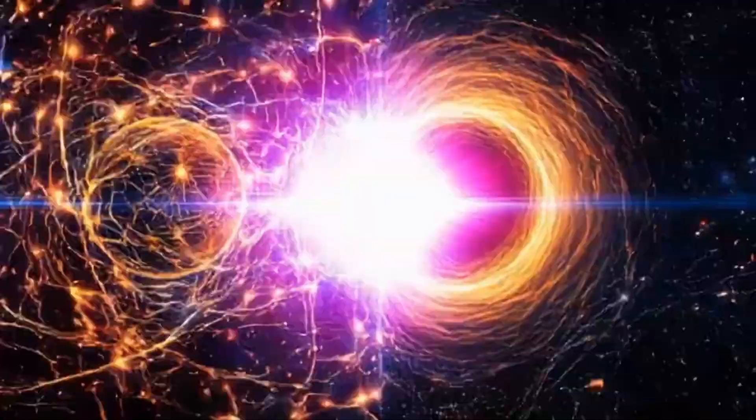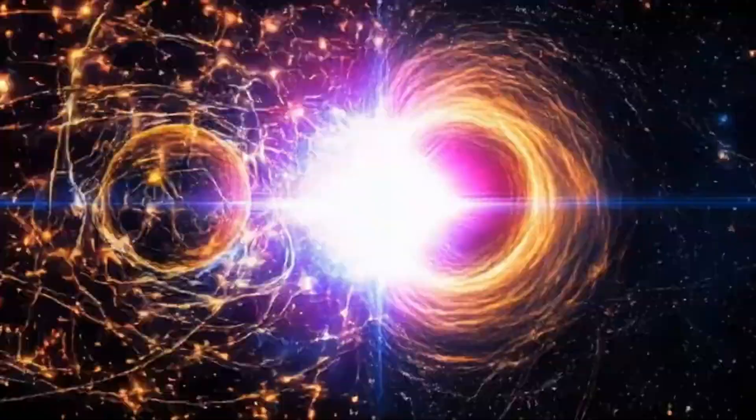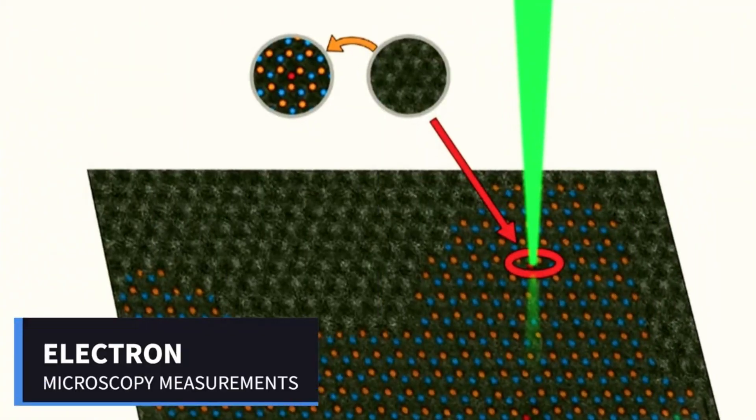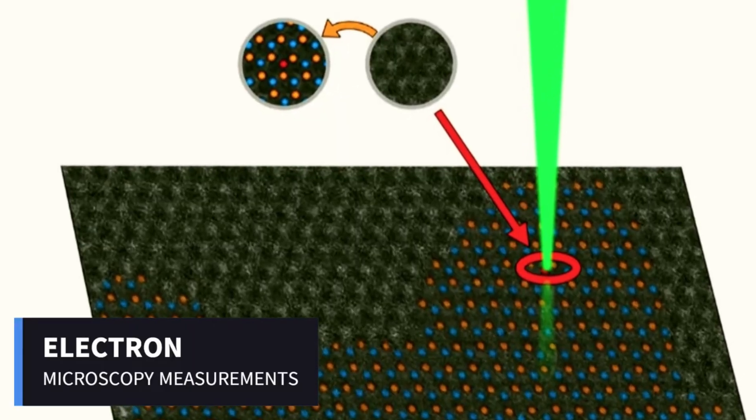At nanoscopic scales, electrons do not behave like tiny balls rolling through wires. They interfere with themselves, tunnel through barriers, and respond collectively to their environment. These effects are not marginal. They dominate the behavior of matter.